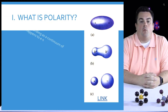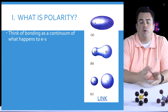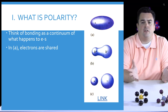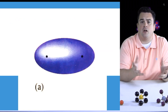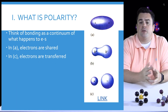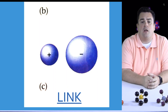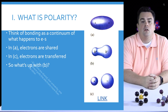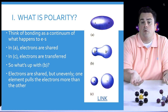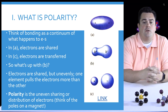So what is polarity? I want you to think of bonding as a continuum of what happens to electrons. We're going to reference the image on the right. In image A, electrons are being shared equally — that purple blob represents the electron cloud. In C, the bottom one, electrons have been transferred, forming two ions. In B, electrons are shared but unevenly, so one element pulls the electrons more than the other. This is called polarity — an uneven sharing or distribution of electrons. Think of the poles of a magnet.